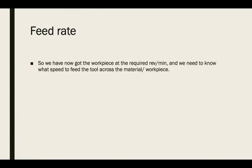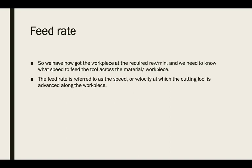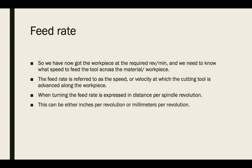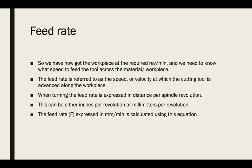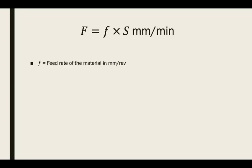Now that we have the required revolutions per minute, we need to know what speed to feed the tool across the workpiece. The feed rate is the speed or velocity at which the cutting tool is advanced along the workpiece. When turning, the feed rate is expressed in distance per spindle revolution — either inches per revolution or millimeters per revolution. The feed rate in millimeters per minute is calculated using the equation: F equals f times S millimeters per minute, where lowercase f is the feed rate in millimeters per revolution and S is the spindle speed in revolutions per minute.